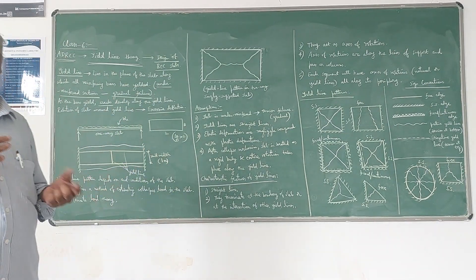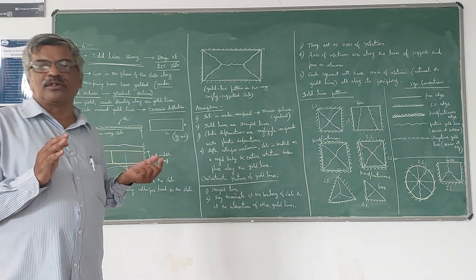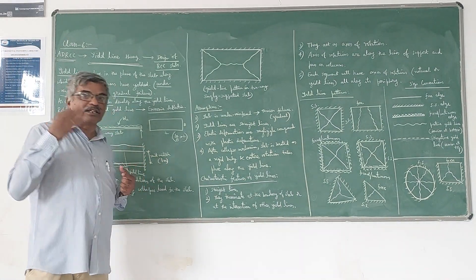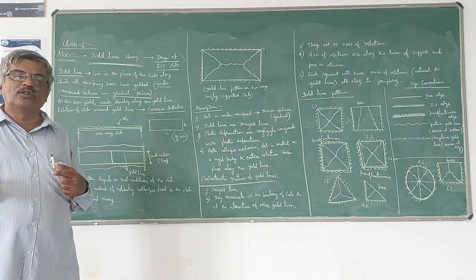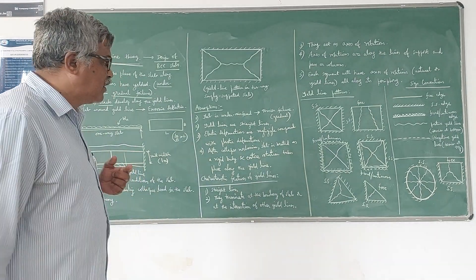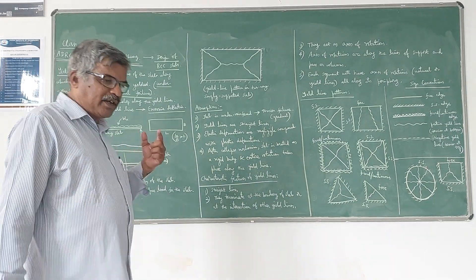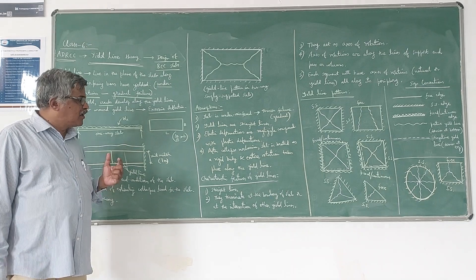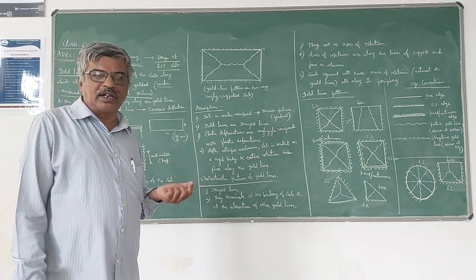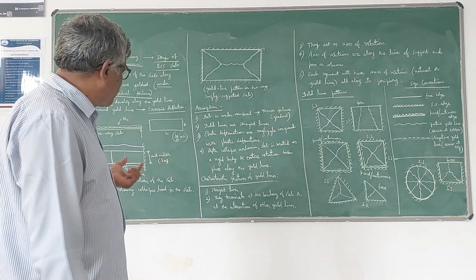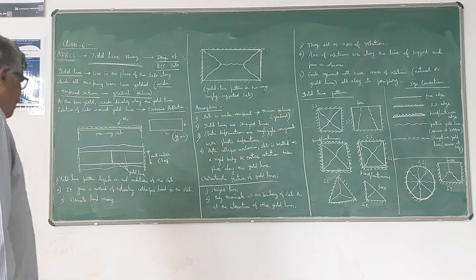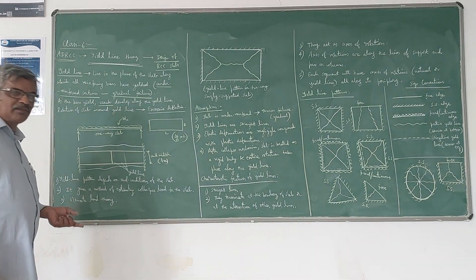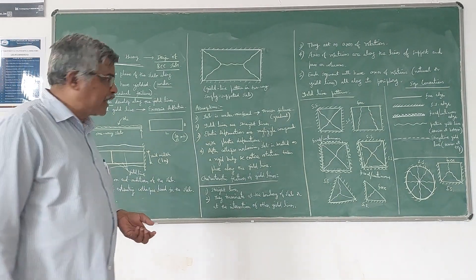We normally use this concept in plastic theory in the case of steel design, where we refer to collapse load or mechanism of failure. Similarly here, we can also compute the collapse load for slabs using this yield line theory, and it takes into account the limit state load theory.